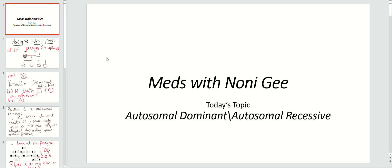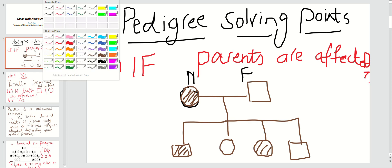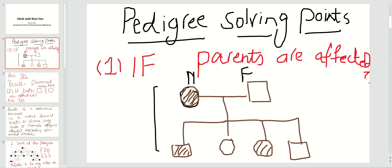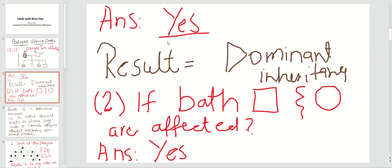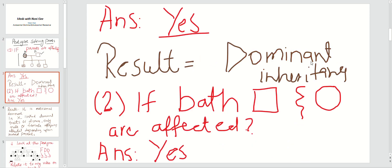Here is the next slide: pedigree solving points. The first question you have to look at in the pedigree is whether the parents are involved. In this pedigree I've made, you can clearly see that the mother is affected. So my answer will be yes. If parents are involved, then you are dealing with dominant inheritance.